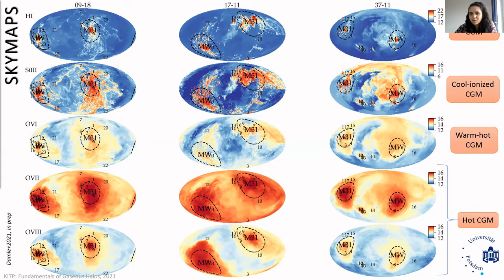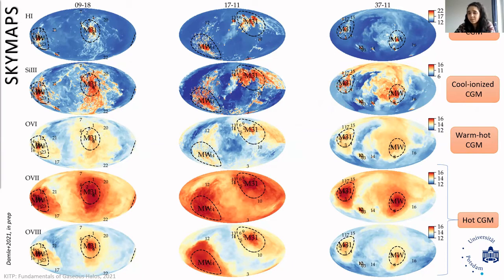The SiIII maps look a bit peculiar in the sense that each SiIII distribution looks distinctly different. We see a lot of very high column density SiIII in realization 17-11, while in 37-11 we see more intermediate column density SiIII. So it might be worthwhile to probe such heterogeneity in the distribution of cool ionized gas by using SiIII as a tracer.